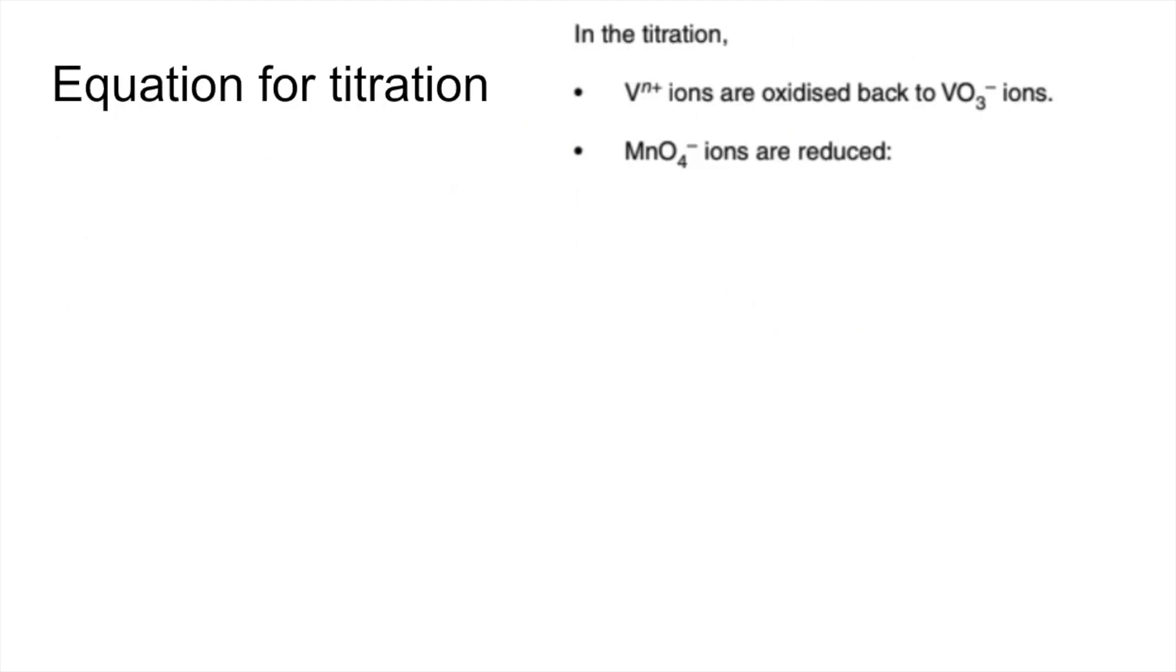So for the equations, what I'm going to do is build the two half equations. Well, one of them was given to us. Build the other one and then combine them to get the overall equation for the titration. So we've just worked out that V was in V2 plus. And in the titration, it gets turned back into VO3 minus ions.